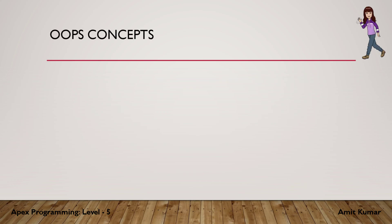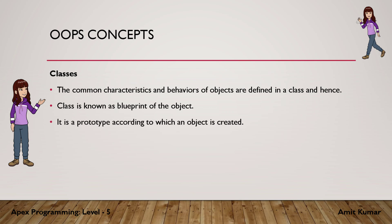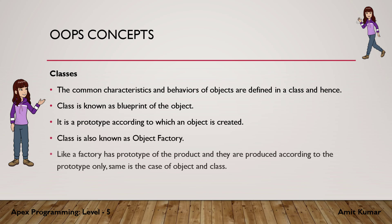Now let's talk about classes. The common characteristics and behaviors of objects are defined in a class, and hence a class is known as the blueprint of the object. It is a prototype according to which an object is created. Class is also known as an object factory.